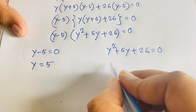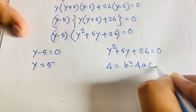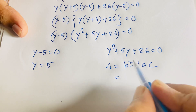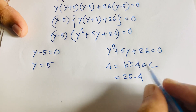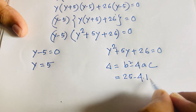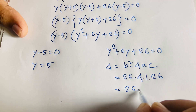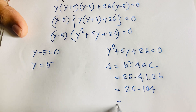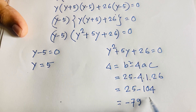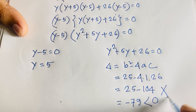For case 2, we compute the discriminant: delta = b² − 4ac, where b = 5, a = 1, c = 26. So delta = 25 − 4(1)(26) = 25 − 104 = −79. Since delta is less than 0, this yields complex/imaginary roots, so we reject this case.